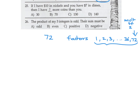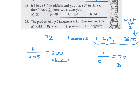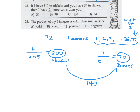I have 10 dollars in nickels; you have 7 dollars in dimes. How many more coins do I have? 10 dollars divided by 0.05 gives 200 nickels. 7 dollars divided by 0.10 gives 70 dimes. 200 minus 70 is 130 more coins. Answer is C.